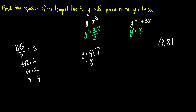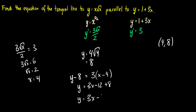With point (4, 8) and slope 3, our equation is y minus 8 equals 3 times (x minus 4). Expanding: y equals 3x minus 12 plus 8, so y equals 3x minus 4. This is the equation of the tangent line to y equals x√x when it's parallel to y equals 1 plus 3x.